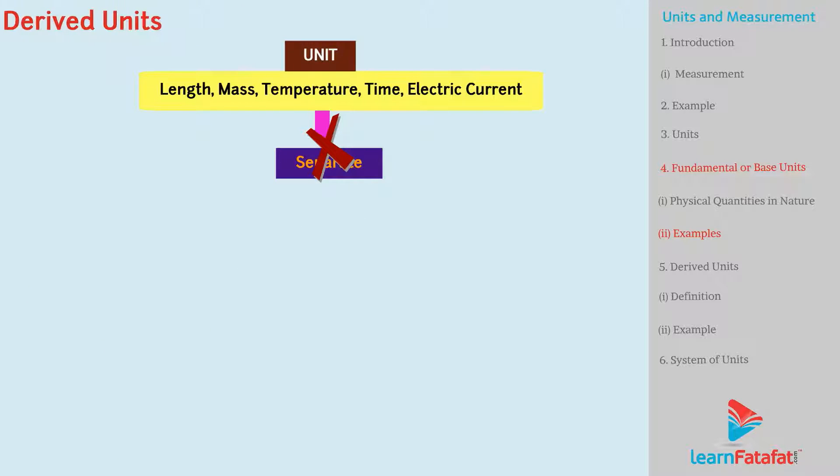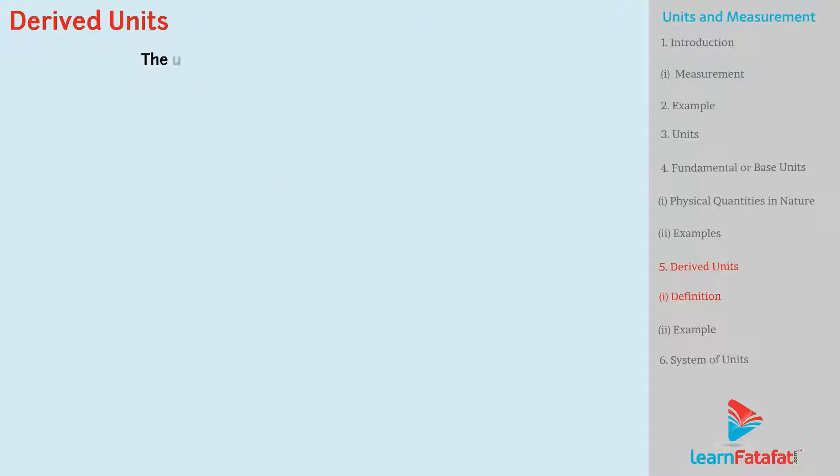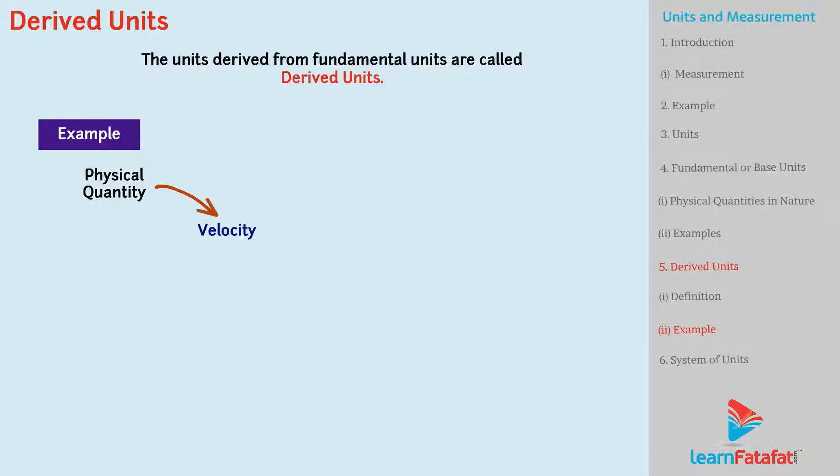Now, we will see derived units. The units derived from fundamental units are called derived units. For example, velocity is a physical quantity which can be expressed with the help of fundamental units meter and second and can be given as meter per second. Thus, meter per second is a derived unit.